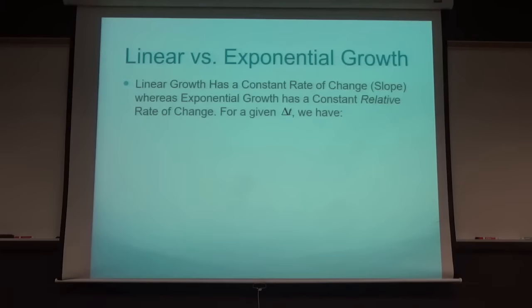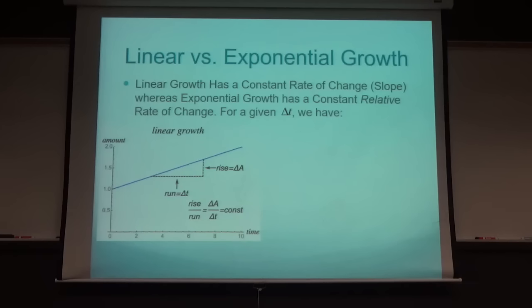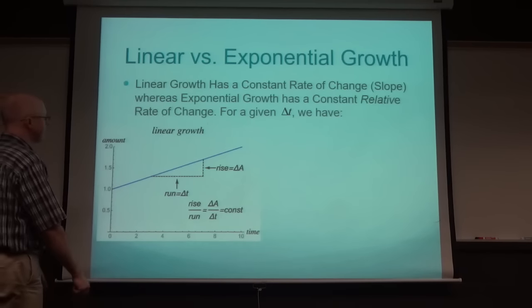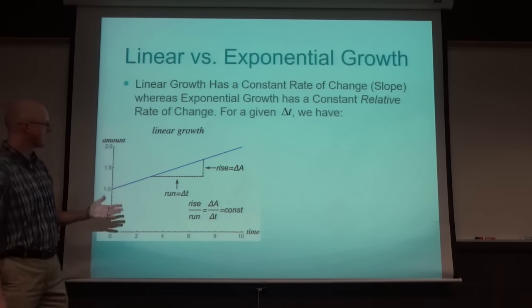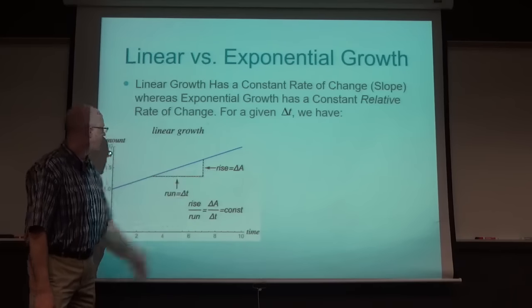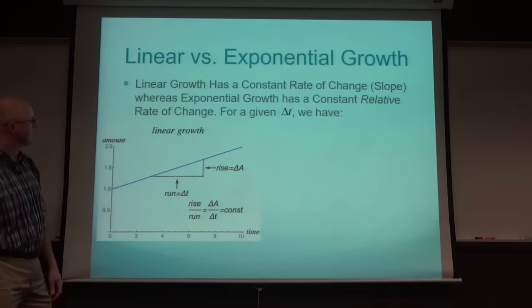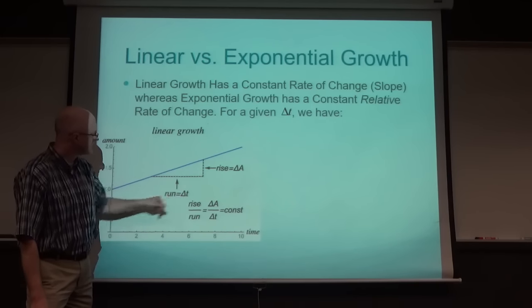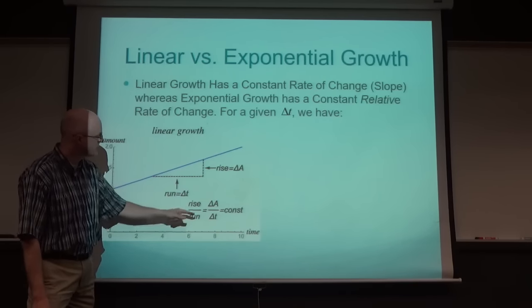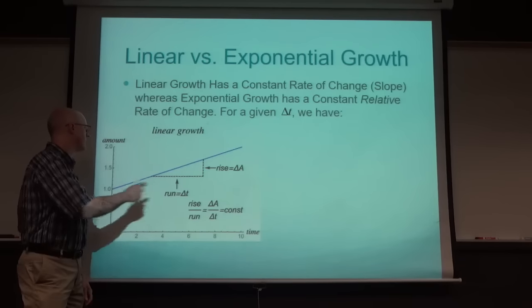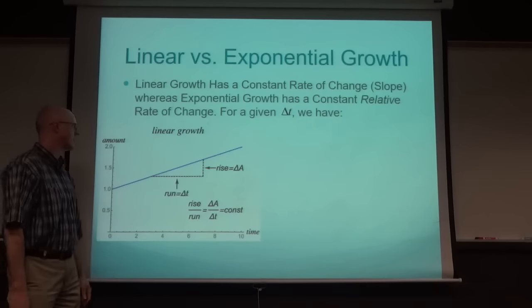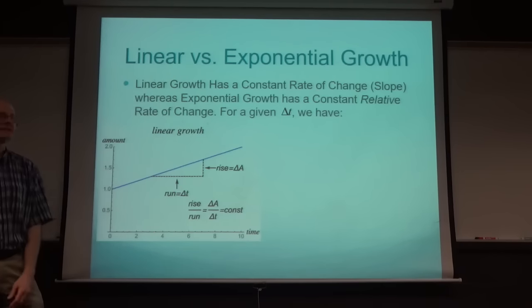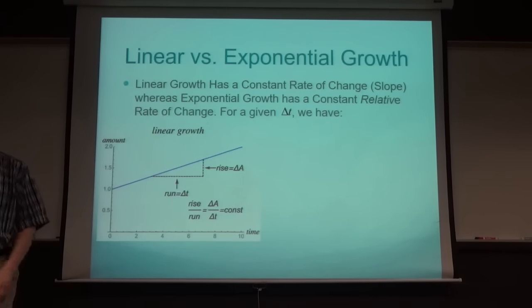For a given change in time (delta T): for linear growth, the graph is a straight line where rise over run is constant. The change in the amount (delta A) divided by the change in time (delta T) stays constant no matter where you are on the curve. Take the rise over run given any two distinct points on this straight line and you get the same slope - that's also called the rate of change.